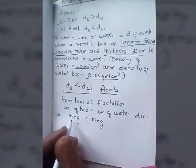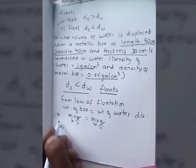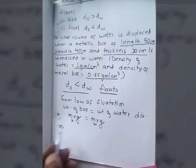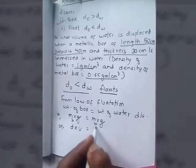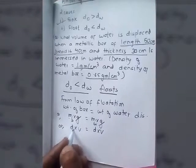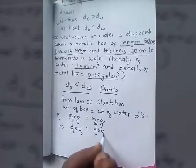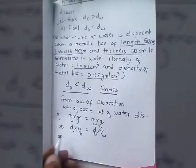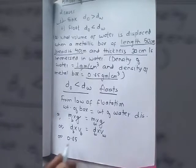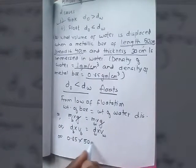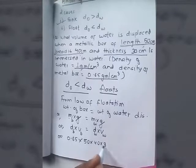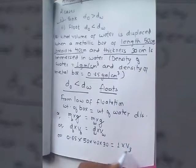Using the weight formula (m × g), the g cancels out on both sides, so we get mass of box equals mass of displaced water. Converting mass to density × volume, we get: density of body × volume of body = density of water × volume of displaced water. Substituting values: 0.65 × (50 × 40 × 30) = 1 × volume of displaced water.